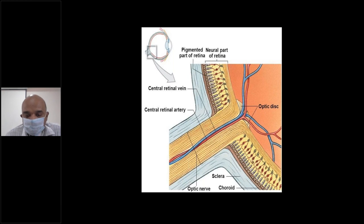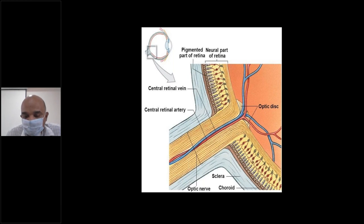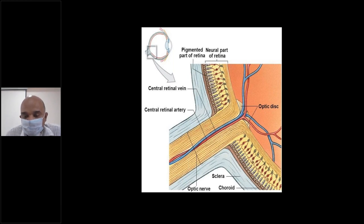The central retinal vein is here. When the occlusion is at the level of the central retinal vein, the picture is different from when the occlusion is at the level of one of the tributaries or branches. The picture is slightly different, and the way it affects vision and the prognosis for the patient is also slightly different.